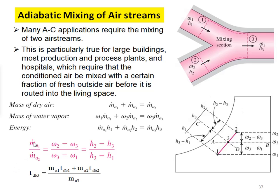From these equations: ṁ_a1/ṁ_a2 = (ω₂ − ω₃)/(ω₃ − ω₁) = (h₂ − h₃)/(h₃ − h₁). The dry bulb temperature at state point 3 is: T_db3 = (ṁ_a1·T_db1 + ṁ_a2·T_db2)/ṁ_a3. From this we can calculate the dry bulb temperature at section 3. These equations are used in adiabatic mixing, which commonly occurs in air conditioning systems.